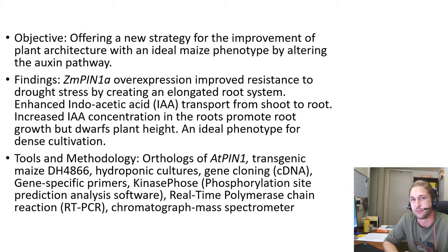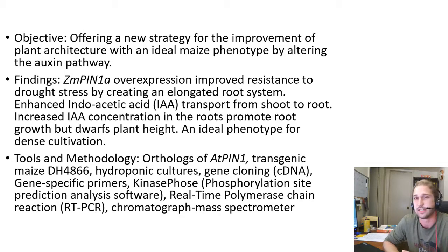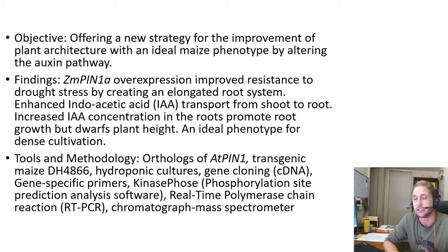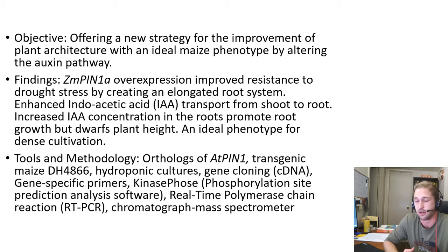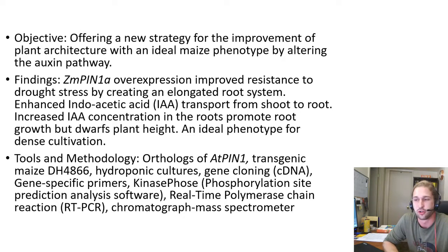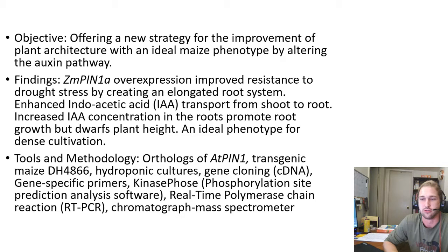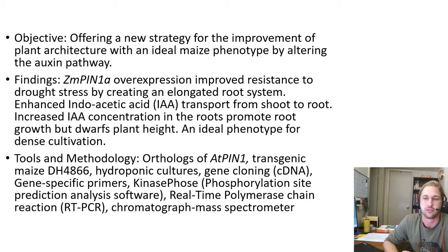This really relates to what I want to study. I'd like to find out if one of these homologous genes — ZmPIN1A, B, or C — can affect plant height without affecting the fruit of the plant. Maybe we can combine that with better agricultural practices to grow these plants indoors. They used a host of tools for finding orthologs of the Arabidopsis thaliana PIN-FORMED protein gene, and they used transgenic maize hybrid DH4866, along with a variation of hydroponic cultures to start these clones.